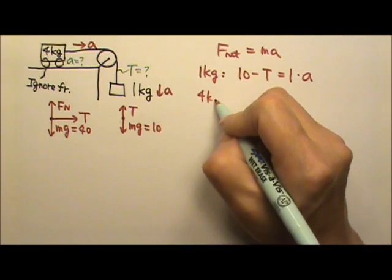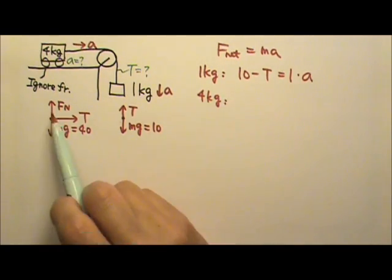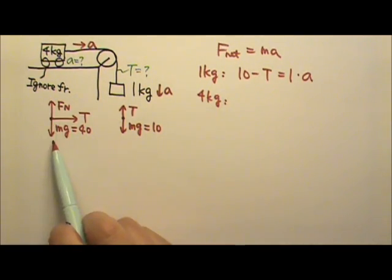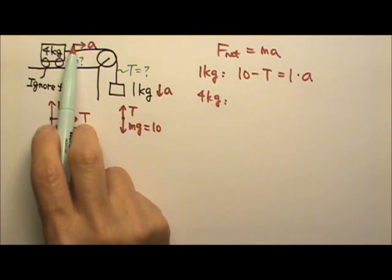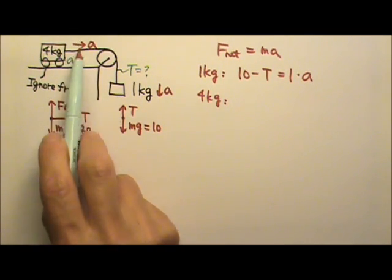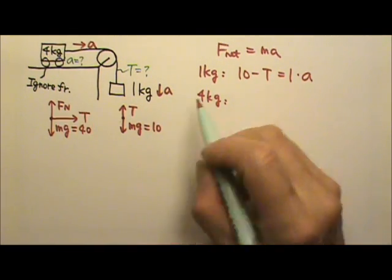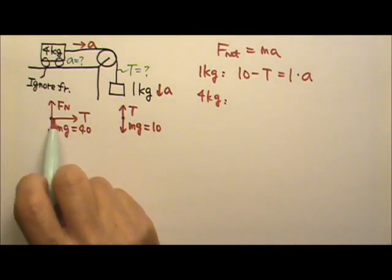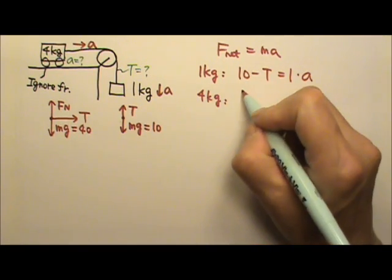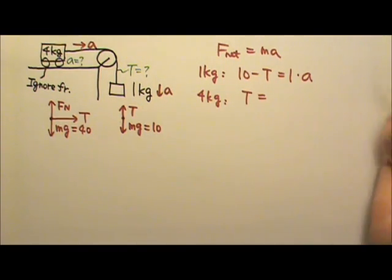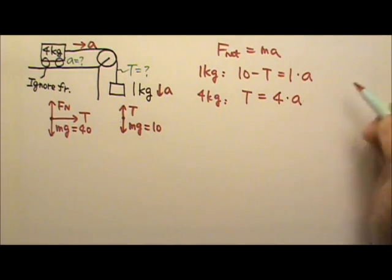For the 4 kg box, we don't have to write anything for the vertical direction. It's just the horizontal direction, because the horizontal direction is the one that has the same acceleration as that one. So, in the horizontal direction, the only net force is tension. Nothing is canceling with it. So it's T equals to M times A.